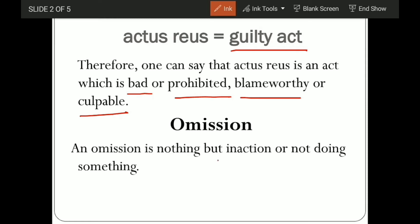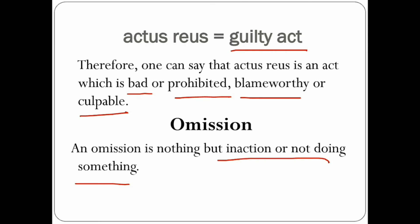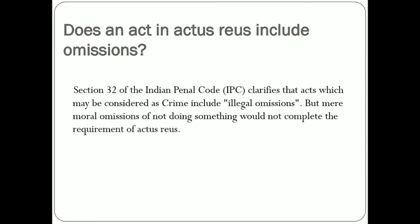We have all dealt with omission in English writing — omission is simply not doing something, simply letting something not happen. You are not doing something — that is omission. Now, what do we mean when we ask: does an act in actus reus include omission or not?